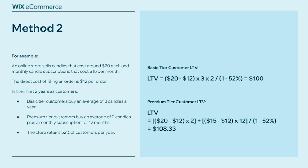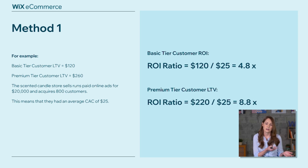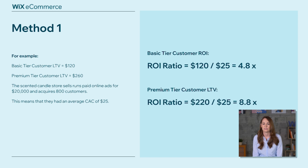Now that we've calculated our lifetime values, we can think about our return on investment ratio — how much you're earning on every customer you're acquiring. To calculate it, we need our customer acquisition cost. ROI ratio = lifetime value ÷ customer acquisition cost. Using method one (basic tier $120, premium tier $220) and spending $20,000 to acquire 800 customers, our average CAC is $25. Basic tier ROI: 4.8x. Premium tier ROI: 8.8x. Using method two (basic $100, premium $108.33), we get 4x and 4.3x respectively.